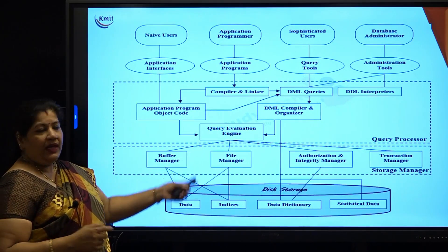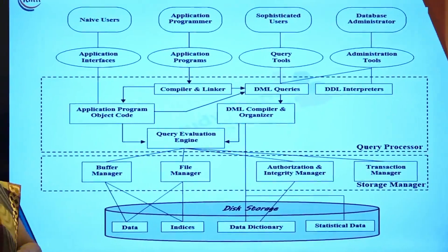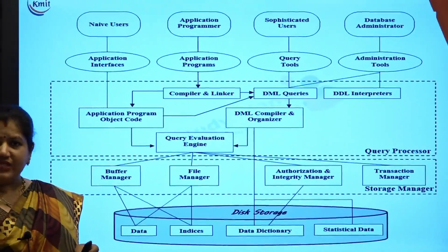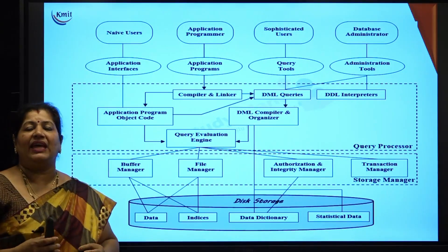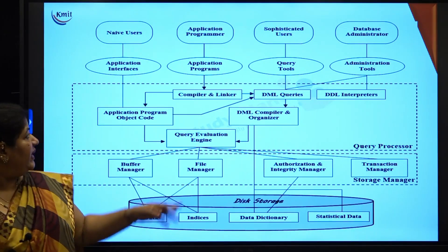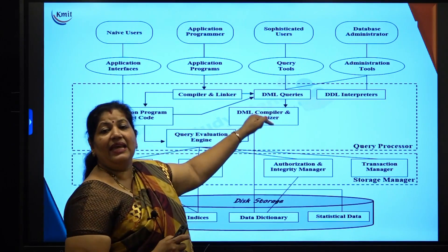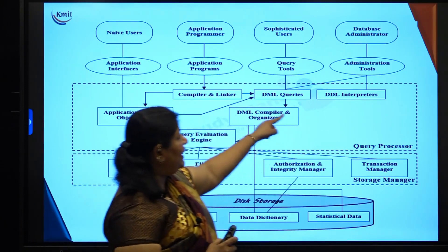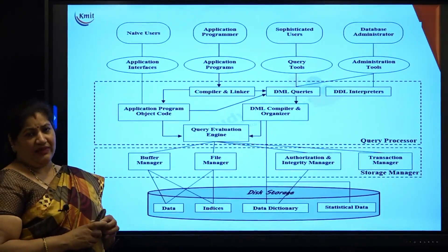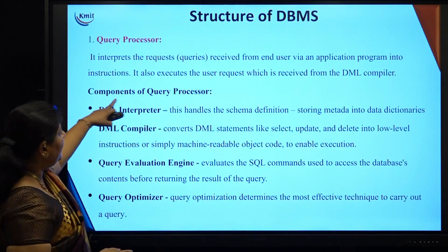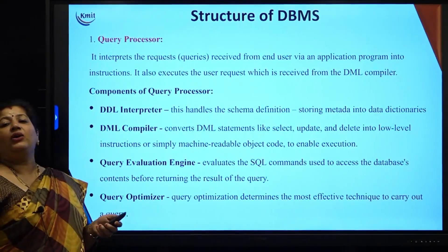Coming back to the diagram, the query processor is the level just below the users. The database administrators and analysts — sophisticated users — directly query the database, whereas application programmers and end users access the database through application programs or user interfaces. When a query is given to the database, it is the responsibility of the query processor to convert it into actual instructions. The components of the query processor are: DDL interpreters, DML compilers, query evaluation engine, and query optimizer.